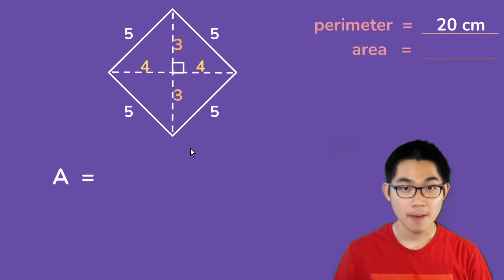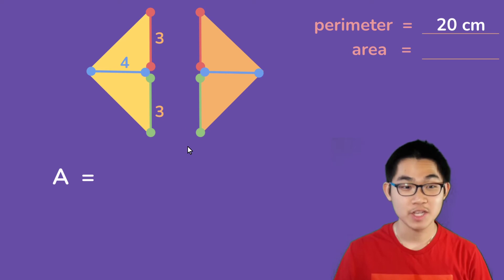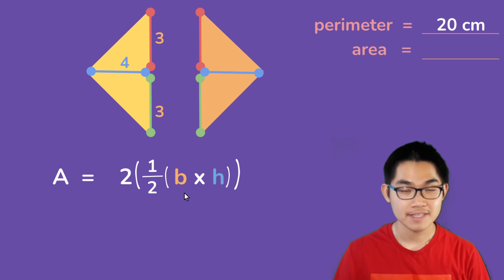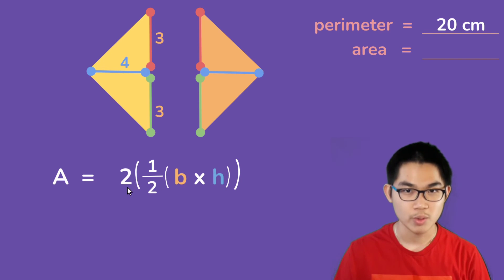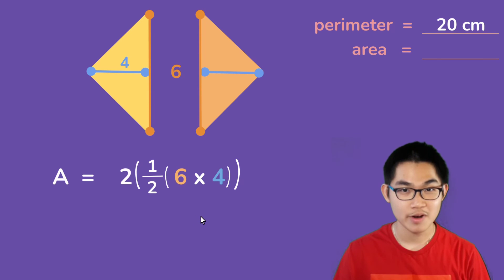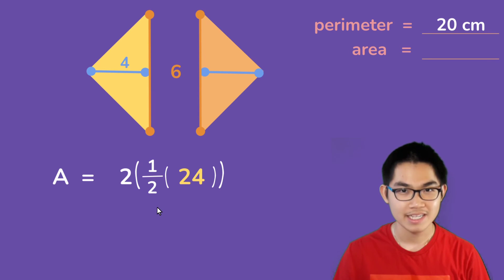To find the area, I'm going to split the shape into halves. This side is 3, this side is also 3, and the height of this triangle is 4. The area of the kite is the area of these two triangles. The area of one triangle is one half times the base times the height, and since there are two triangles, we multiply by 2. The base is 6 and the height is 4. 6 times 4 gives you 24, and 2 times one half is 1, so the area is 24 centimeters squared.